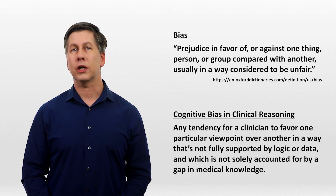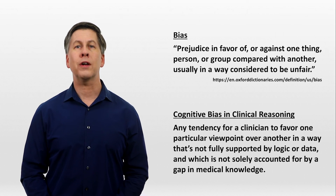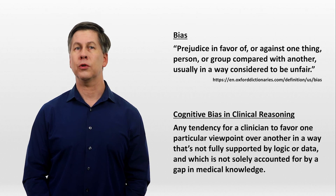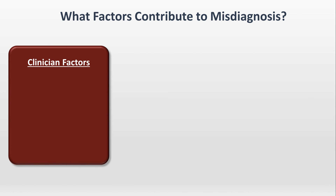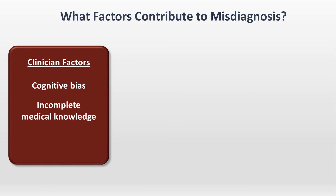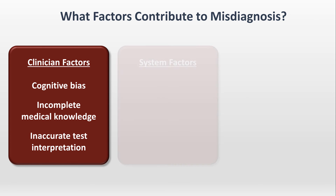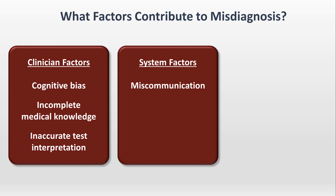Why do we care about cognitive bias in clinical reasoning? We care because it is one of the most notable factors that contribute to misdiagnosis. Some of these factors can be categorized as clinician factors — things that just depend on us. In addition to cognitive bias, this also includes incomplete medical knowledge; for example, our illness scripts for a disease might be too incomplete, and the inaccurate interpretation of diagnostic tests. Some factors are system factors, like miscommunication between healthcare providers, inaccurate data, a particularly obvious example of which is a lab error.